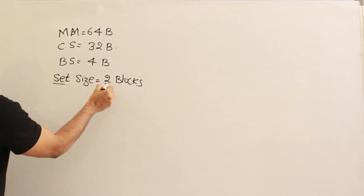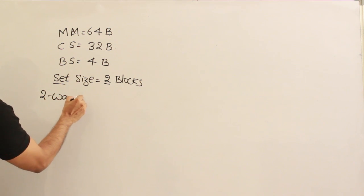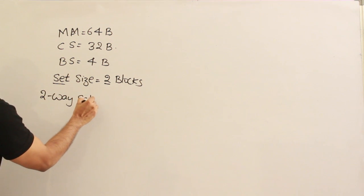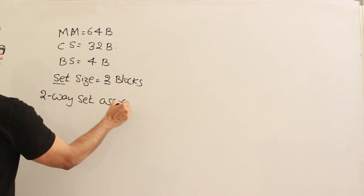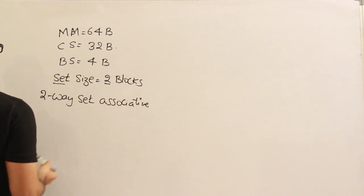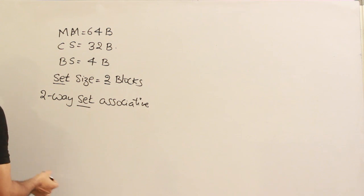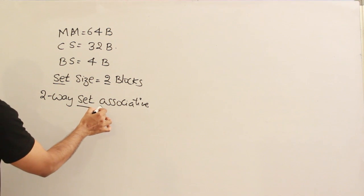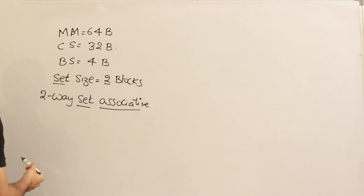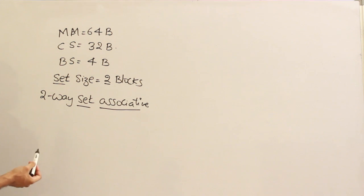Since the set size is 2, it is called two-way set associative. We initially use direct mapping to get into the set, and after we get into the set we use associative search. That is why it is called set associative — two-way set associative.